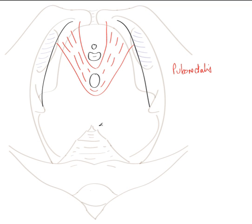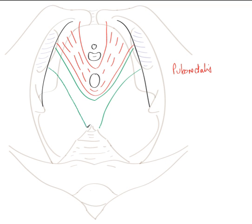Posterior to puborectalis we have pubococcygeus. This muscle also comes from the tendinous arch of levator ani and runs towards the coccyx. Here we can see both pubococcygeus muscles coming from the tendinous arch and running towards the coccyx, shown here in green fibres — pubococcygeus, our second muscle of the pelvic diaphragm.